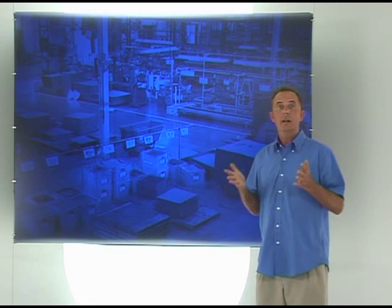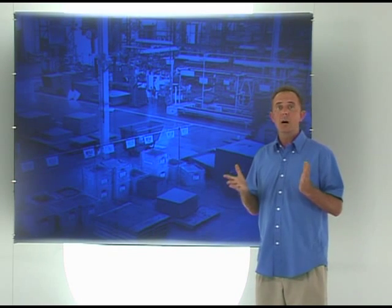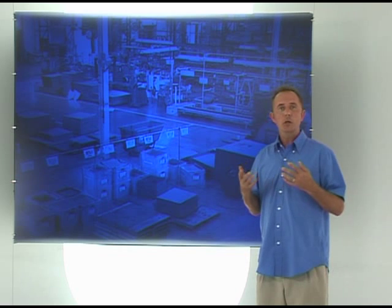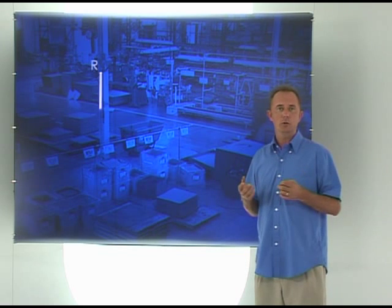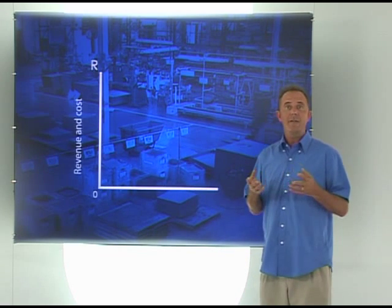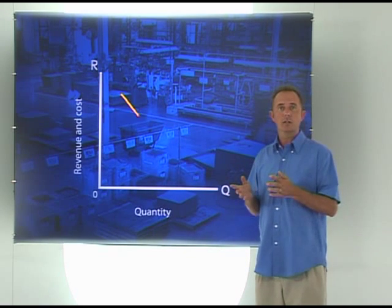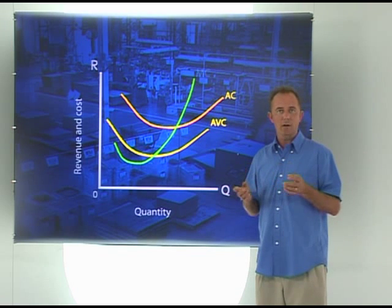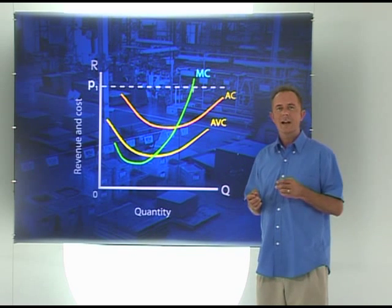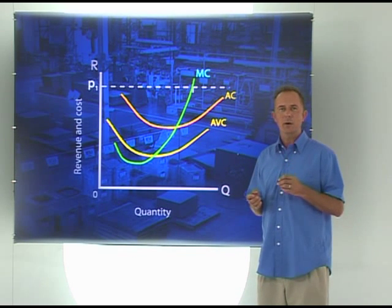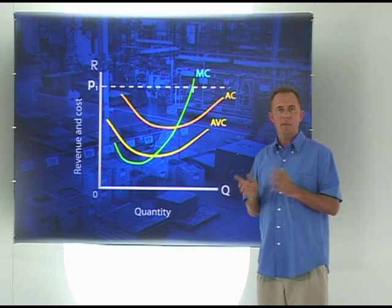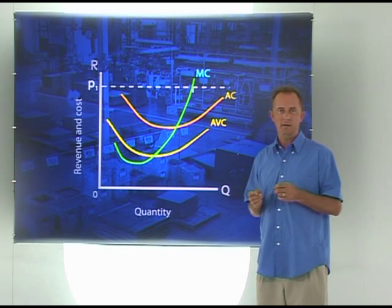Let's see what we can learn by combining our marginal cost curve with two of the other tools we were given earlier: the average total cost curve and the average variable cost curve. As a starting point, we'll assume the selling price determined by the market is P1.